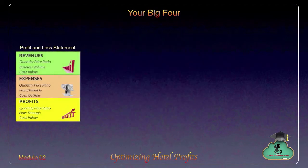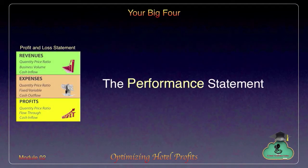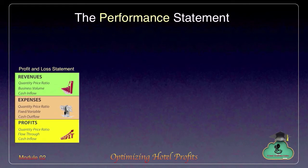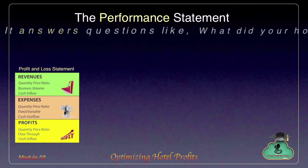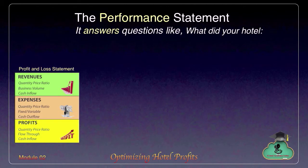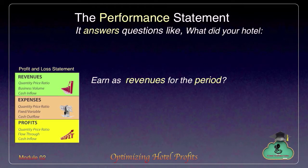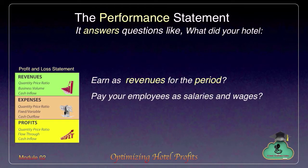Welcome to the first character in our story: the profit and loss statement, called the performance statement. It is the statement which measures business activities of your hotel during a particular month. The performance statement answers questions relating to revenues, expenses, and profits for the period. It also answers questions of increase or decrease of revenues, expenses, and profits over last year.